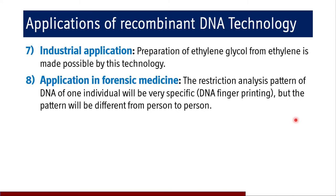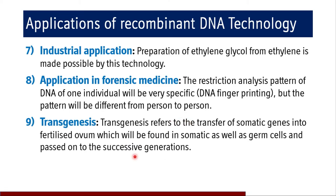In forensic medicine, investigation of a crime can be done using recombinant DNA technology and specifically PCR. The restriction analysis pattern of an individual's DNA is unique, as understood through DNA fingerprinting, and the pattern differs from person to person — allowing identification of suspects. There are also applications in transgenesis, which refers to the transfer of genes into a fertilized ovum, to be found in somatic as well as germ cells and passed on to successive generations.